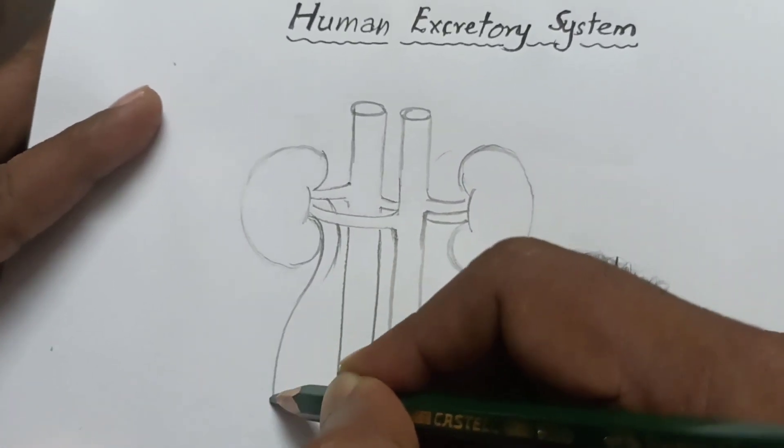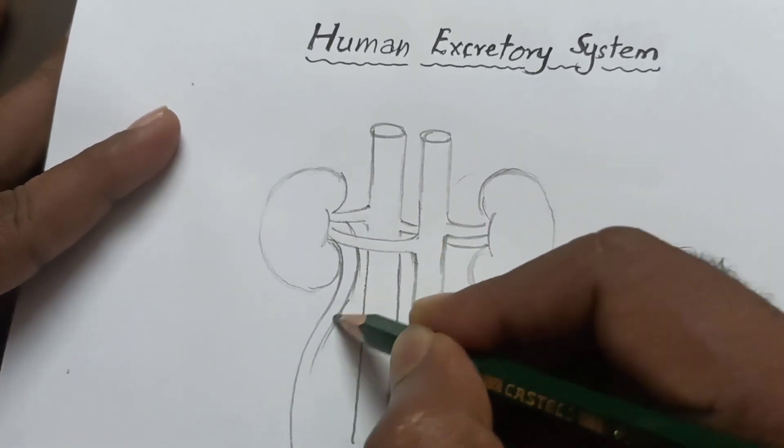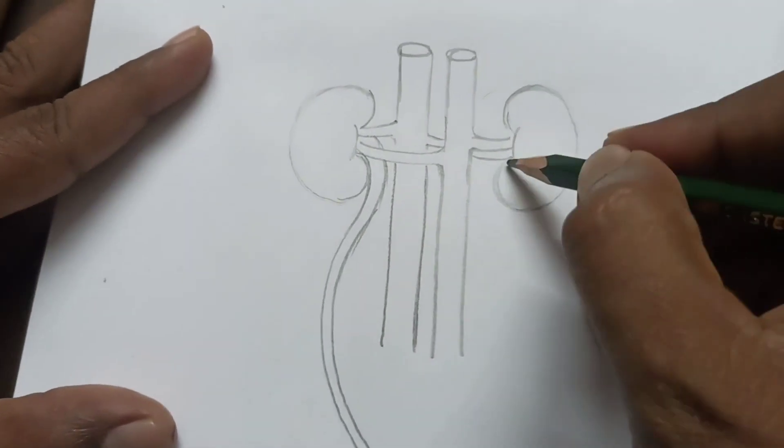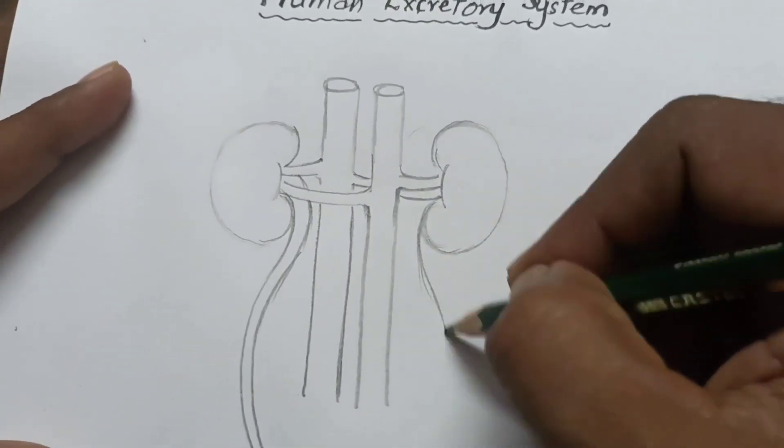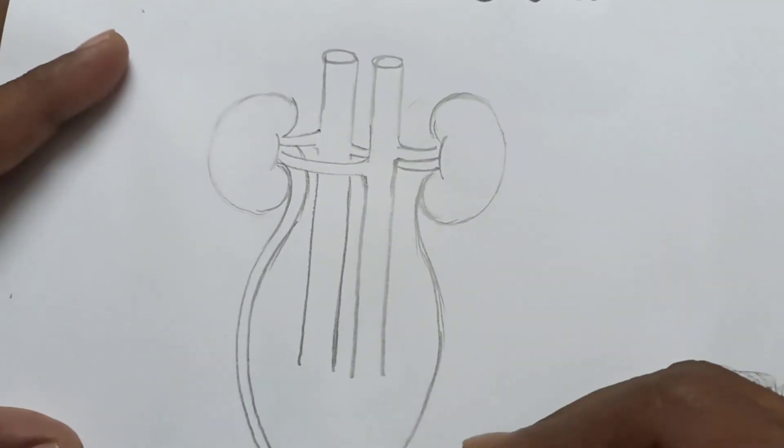Next I am drawing the right ureter. This is the right ureter which comes from the right kidney.